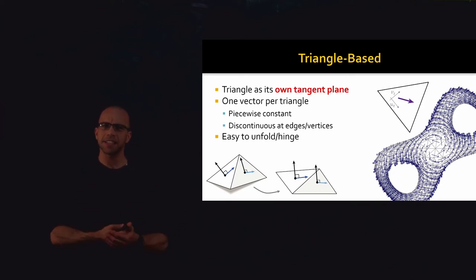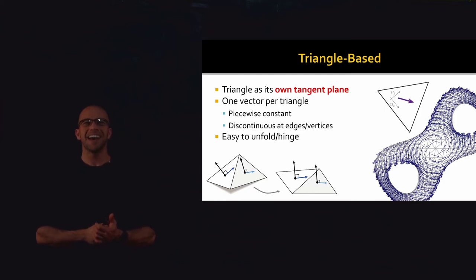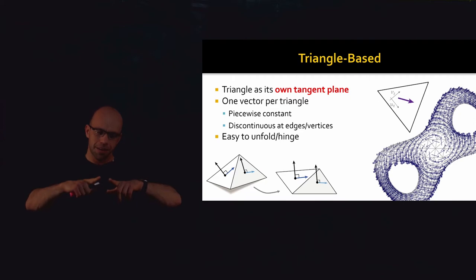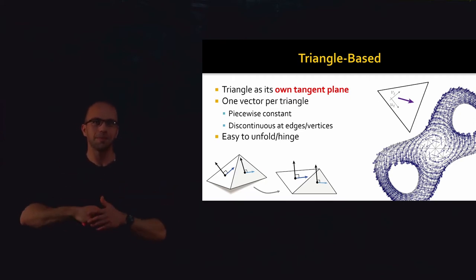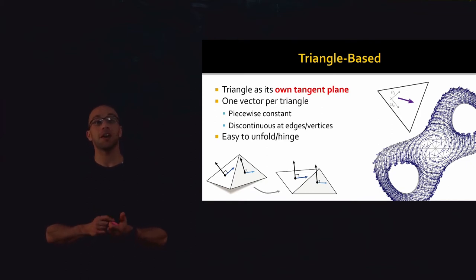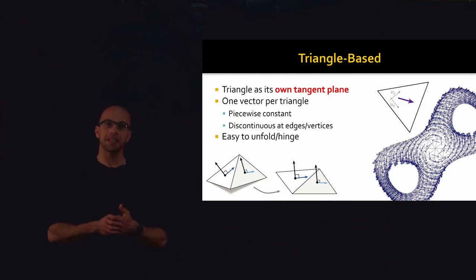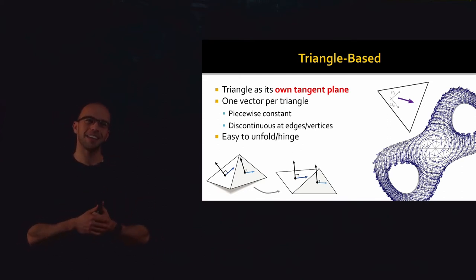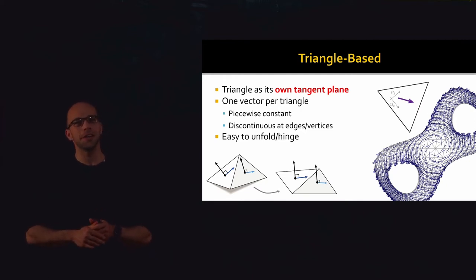The question is how to express that tangency constraint. If you represent your vector field as one vector per triangle, that's probably the simplest way: the three vertices of the triangle form a plane, and a vector in the plane of the triangle is totally reasonable to think of as tangent to your discrete surface. The number of degrees of freedom in a triangle-based vector field is two times the number of triangles, because the tangent plane to each triangle is a two-dimensional space. A very typical thing in code is to explicitly store a UV basis for each triangle.